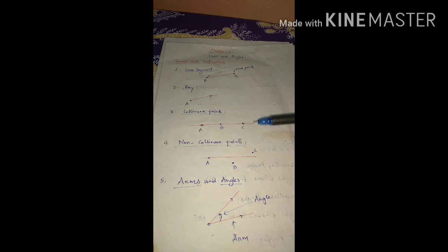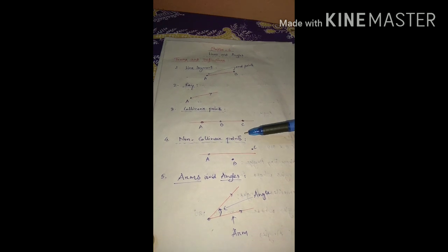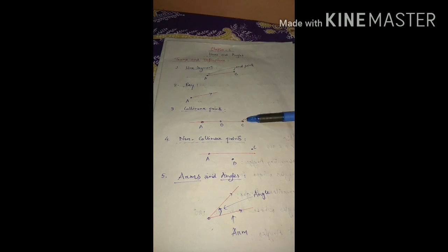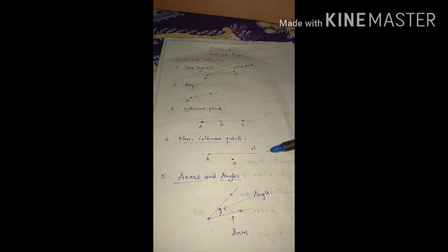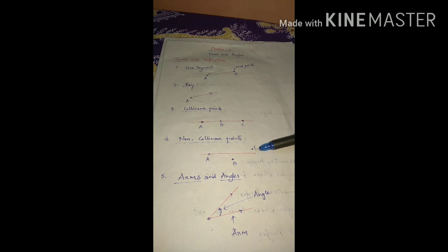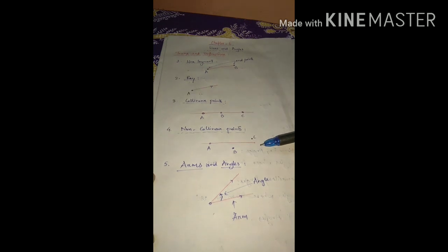Next, number four: non-collinear points. Non-collinear points are the opposite of collinear points. That means if the points are not lying on a line — you see here A is on the line but B and C are not on the line — so A, B, and C are non-collinear points.